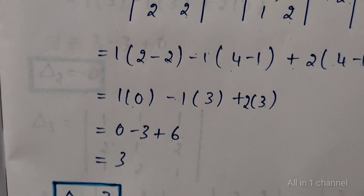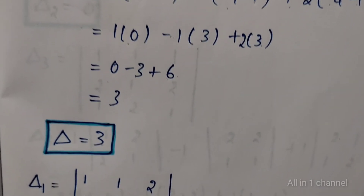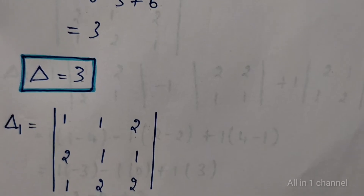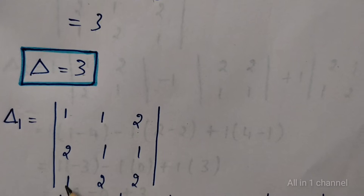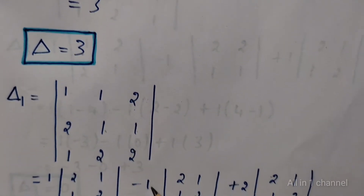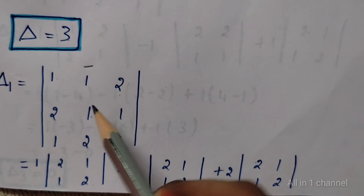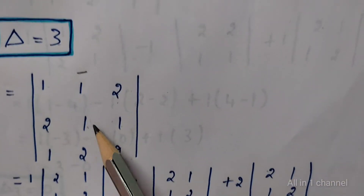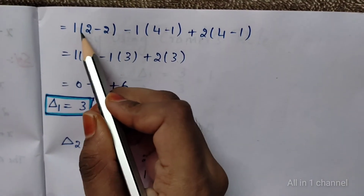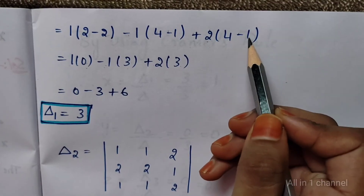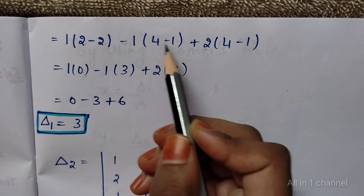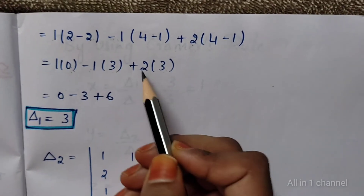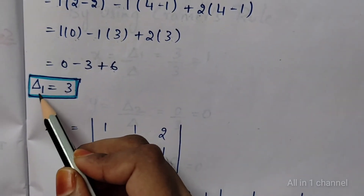Delta equal to 3. We need to find delta 1 value. In place of first column we have to write constants 1, 2, 1, remaining all same as matrix A. Computing: 1 into delete first row and first column: 1, 1, 2, 2. Minus 1: delete first row and second column: 2, 1, 1, 2. Plus 2: delete first row and third column: 2, 1, 1, 2. Result: 1 into 0 equals 0, minus 1 into 3 equals minus 3, plus 2 into 3 equals 6. Minus 3 plus 6 equals 3. So delta 1 equal to 3.